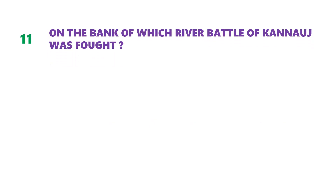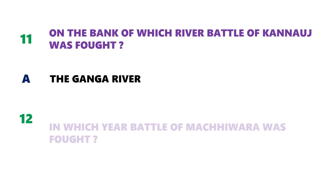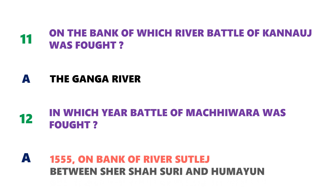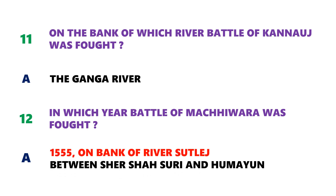Question number 11: on the bank of which river was the battle of Kanuj fought? The battle of Kanuj was fought on the bank of river Ganga. Next question: in which year was the battle of Machivara fought? In the year 1555 the battle of Machivara was fought on the bank of river Sutlej, between Sher Shah Suri and Humayun.